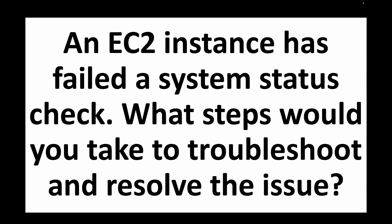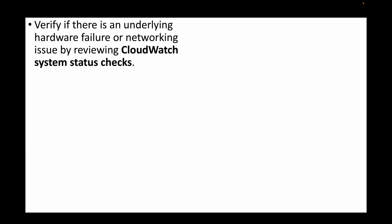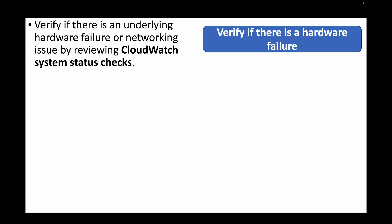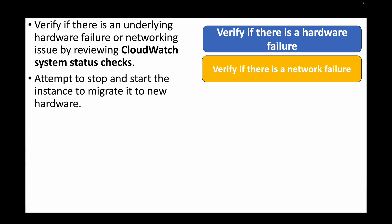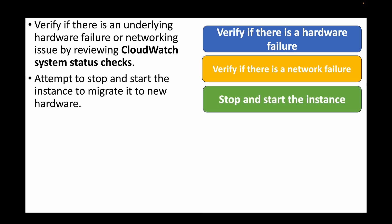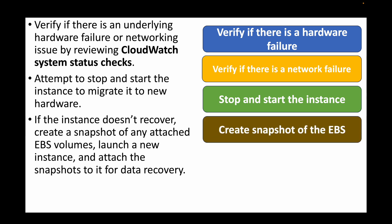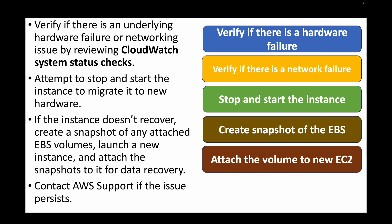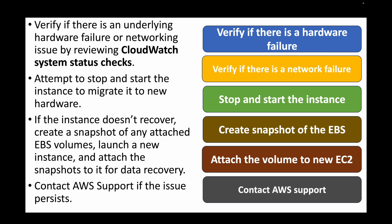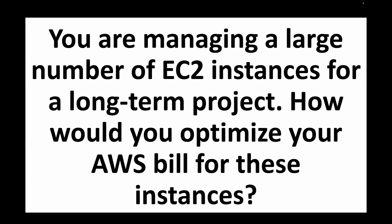The next question: an EC2 instance has failed a system status check — what steps would you take to troubleshoot and resolve this? A system status check indicates there is some underlying hardware failure or networking issue. We can check the CloudWatch system status check in the console. To fix this, we can try to stop and start the instance, which causes EC2 to migrate it to new hardware. If the instance still does not recover, we can create a snapshot of the EBS volume, launch a new EC2 instance, restore the snapshot, and attach the EBS volume to recover the data. If the issue persists, we can contact AWS support and create a ticket.